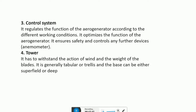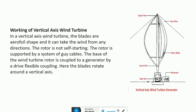The tower has to withstand the action of wind and the weight of the blades; it is generally tubular and the base can be either surface-filled or deep. In a vertical axis wind turbine, the blades are aerofoil-shaped and can take wind from any direction. The rotor is not self-starting. The base of the wind turbine rotor is coupled to a generator by a drive flexible coupling, and the blades rotate around a vertical axis.